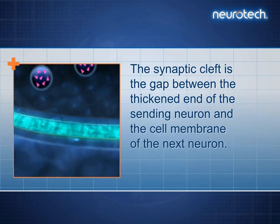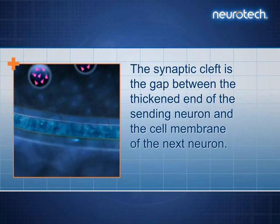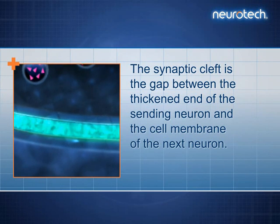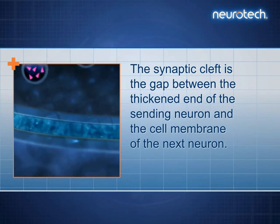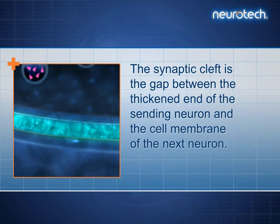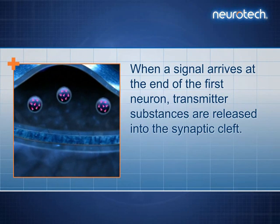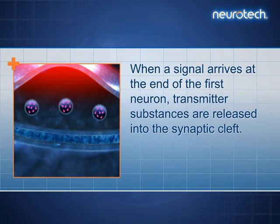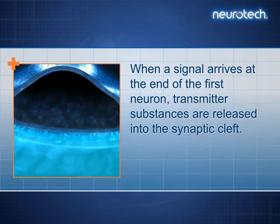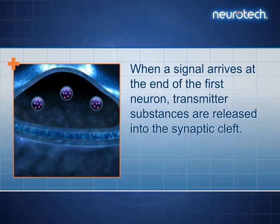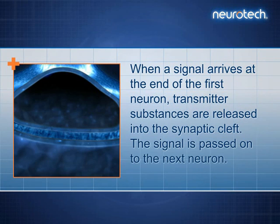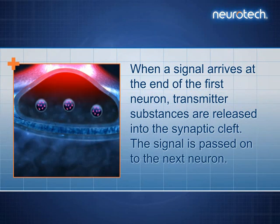The synaptic cleft is the gap between the thickened end of the sending neuron and the cell membrane of the next neuron. When a signal arrives at the end of the first neuron, transmitter substances are released into the synaptic cleft. The signal is passed on to the next neuron.